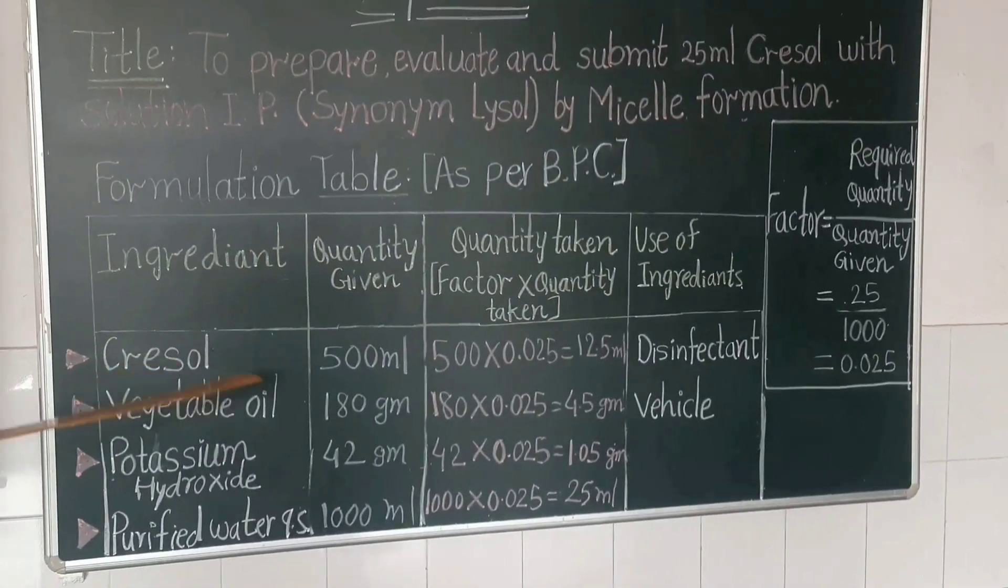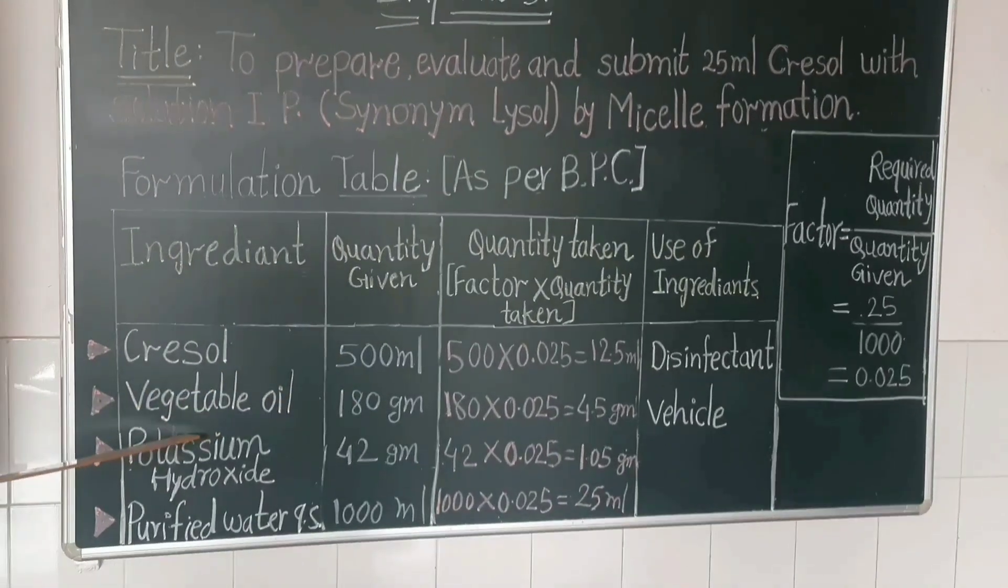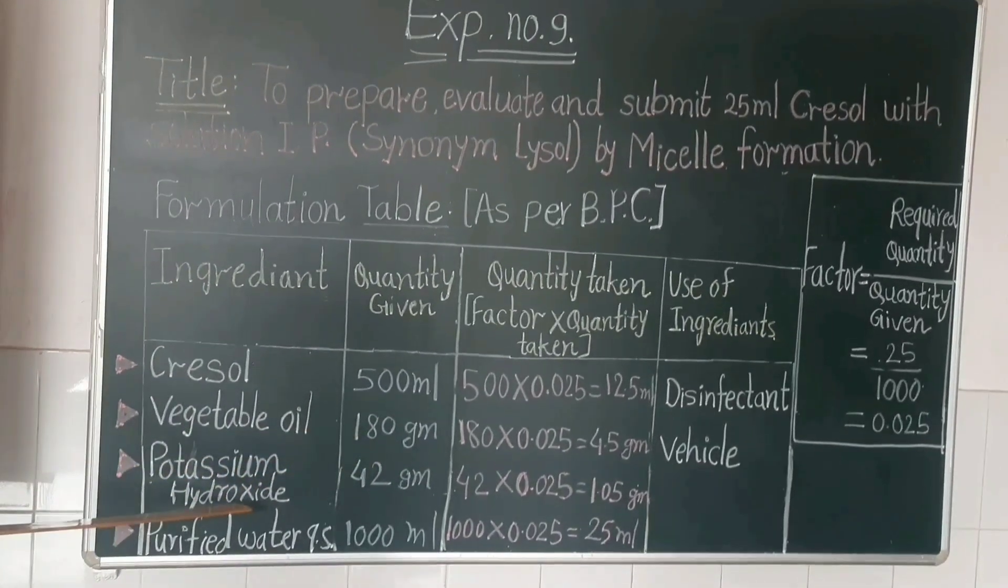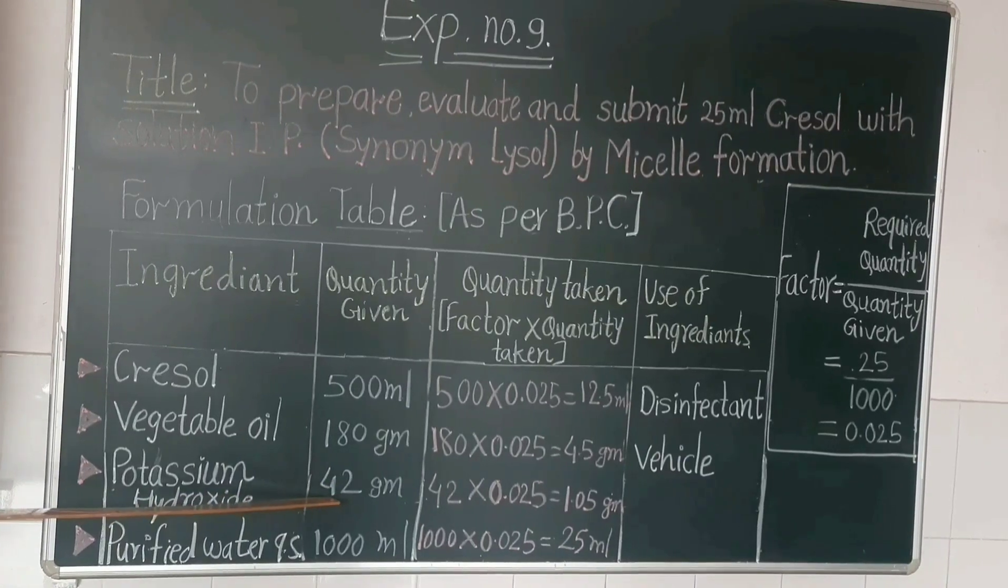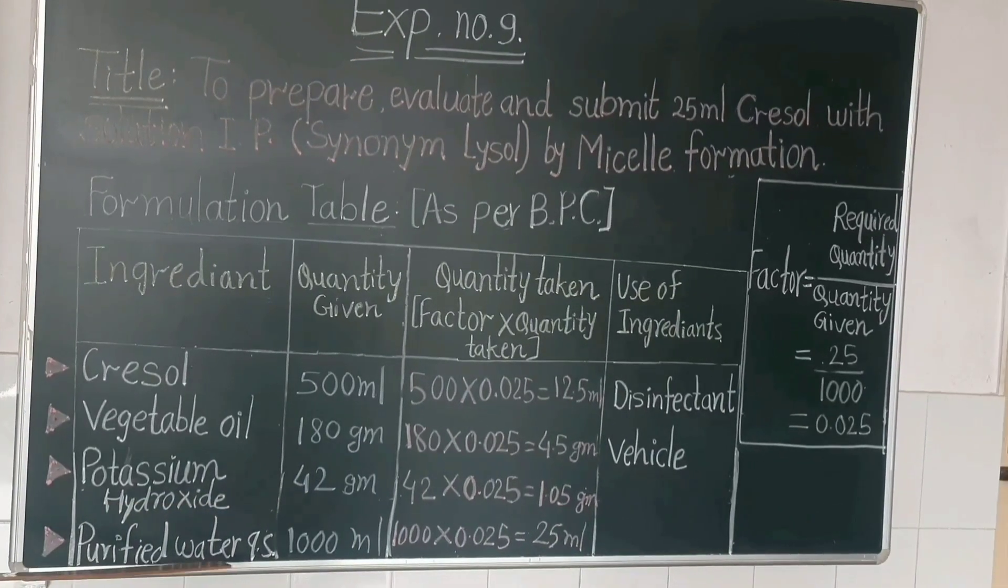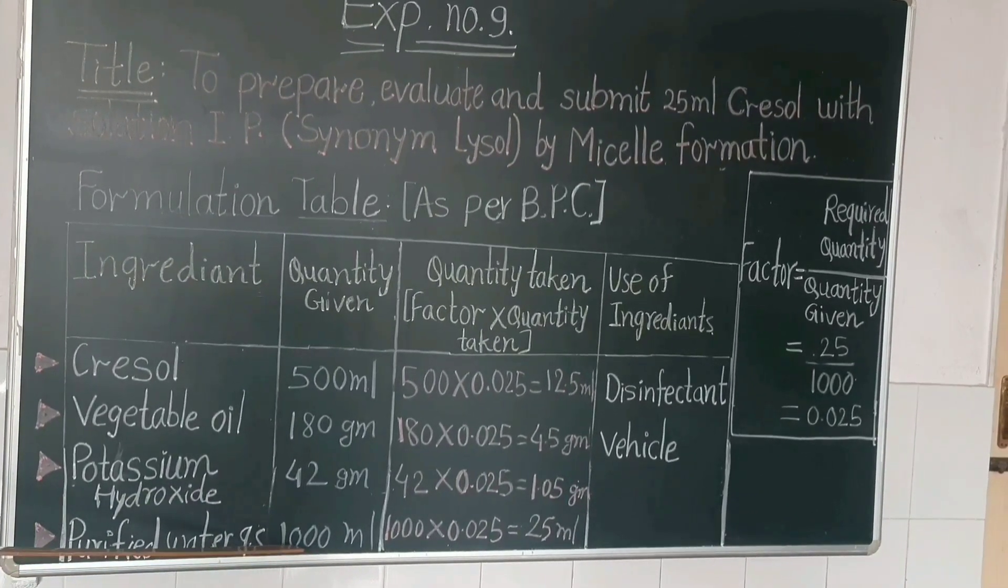Ingredients: Cresol 500 ml, vegetable oil 180 g, potassium hydroxide 42 g, and purified water quantity sufficient 1000 ml.